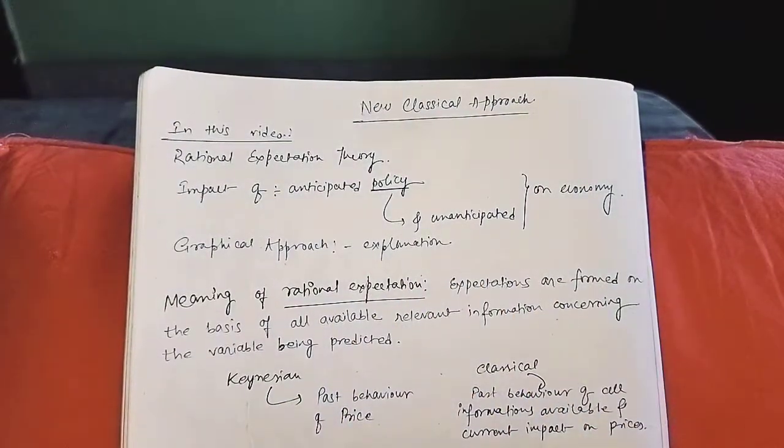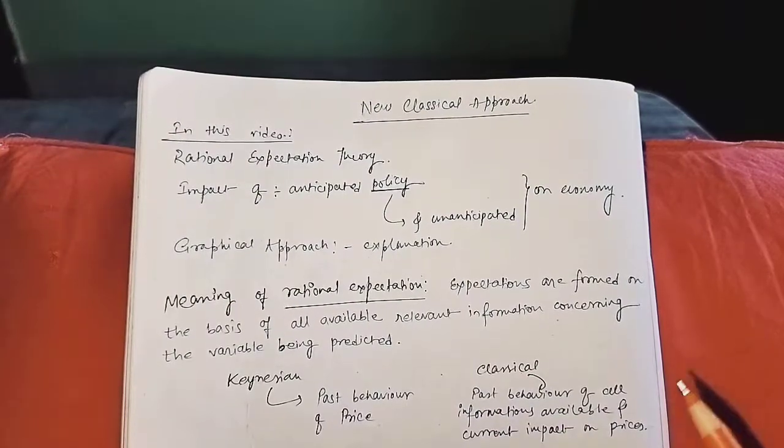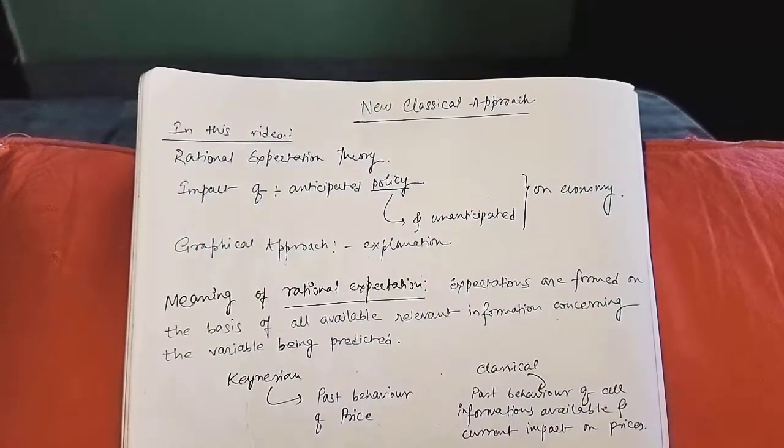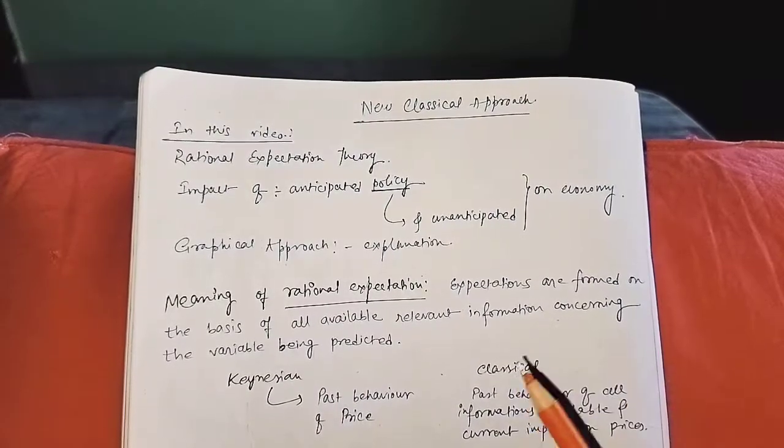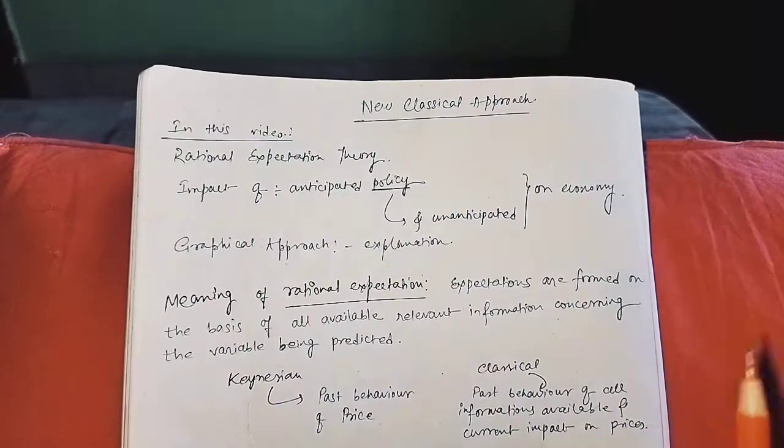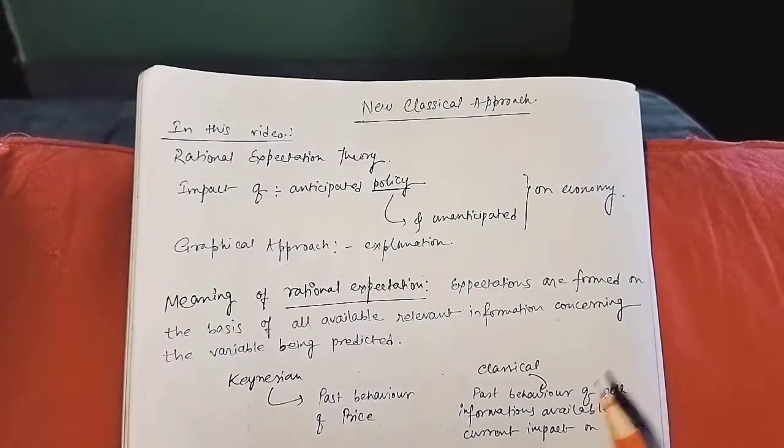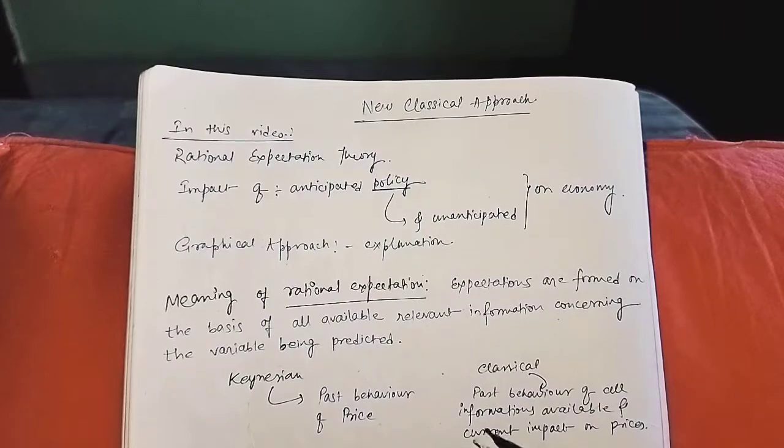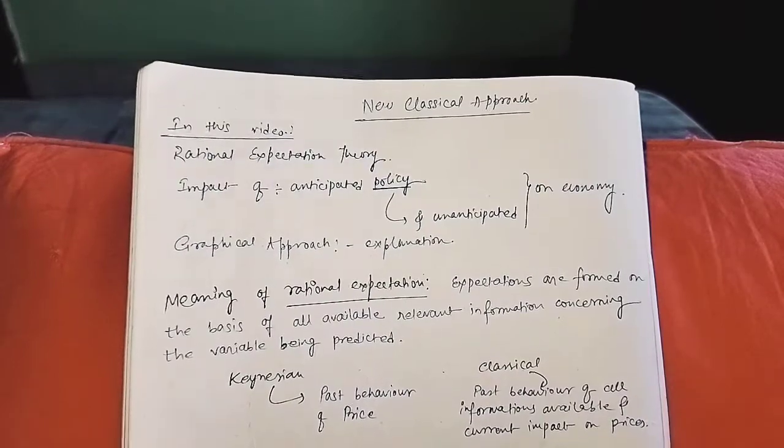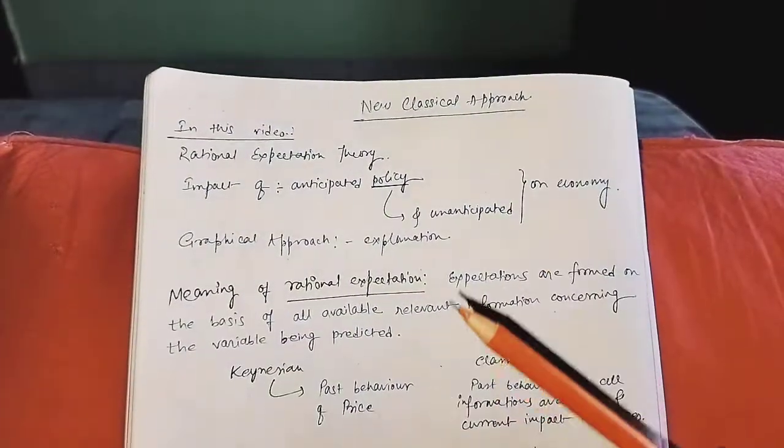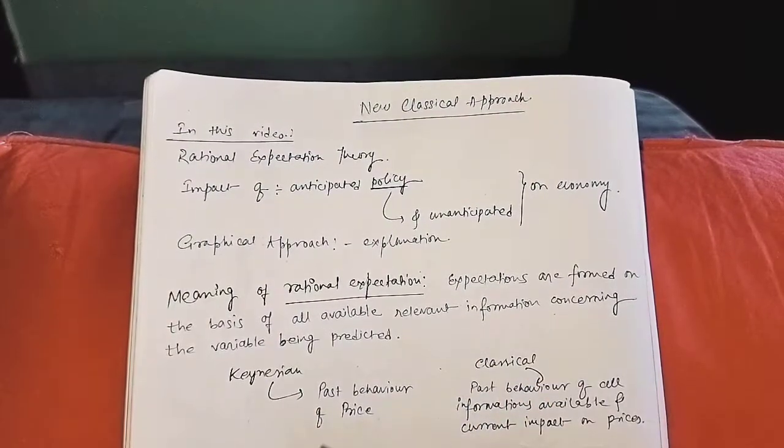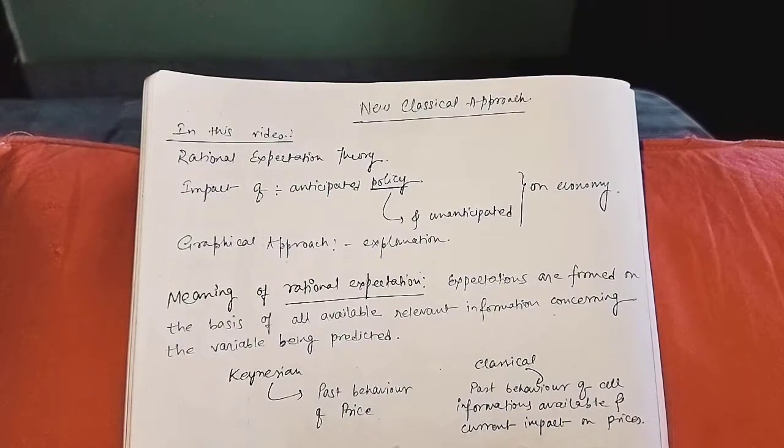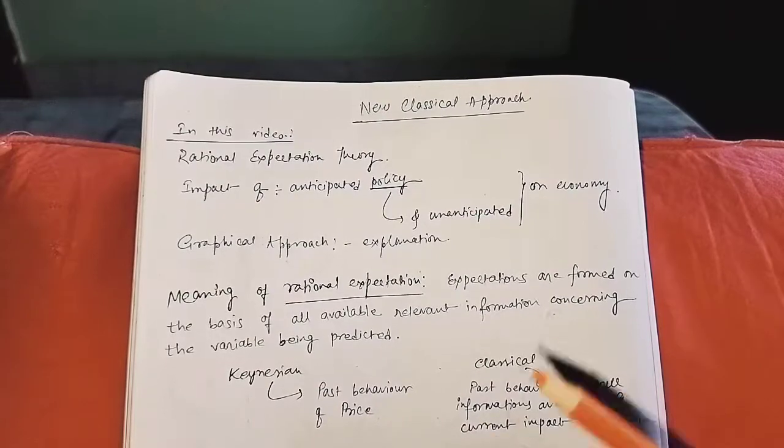If I take all the information and then decide whether Shyam likes me or not, or if there are some problems between us, after collecting all the information, if I reach any decision, we can say that we have decided rationally. According to the output and employment, it seems to shift.